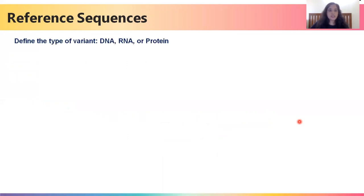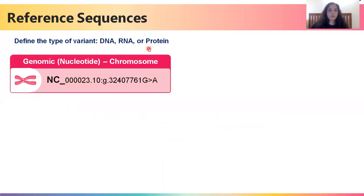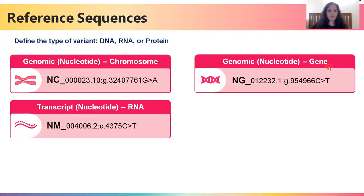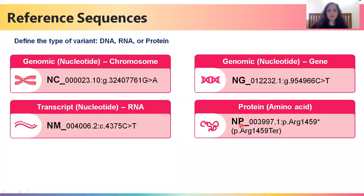Reference sequences help us define the type of the variant — they tell us what kind of variant we are talking about. For DNA-based references, there are two main kinds. The first is an NC ID, which defines the variant in terms of its chromosomal location. The second is an NG ID, which defines the variant in terms of its gene or genomic location.